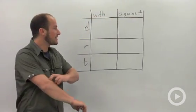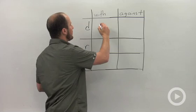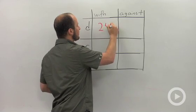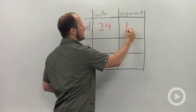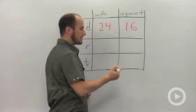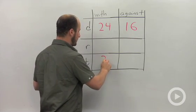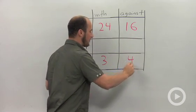What we have is we are going 24 miles with the current and 16 miles against. Our time is 3 and our time is 4.